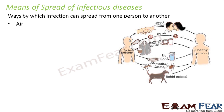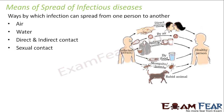Now we will be talking about the various ways by which infection can spread from one person to another. Some of them are: air, water, direct and indirect contact, sexual contact, and vectors. These are the mediums through which infection can spread. You might be wondering what vectors are in biology — we will talk about each of these one by one.